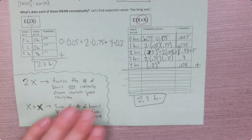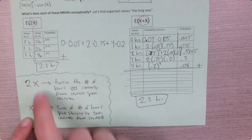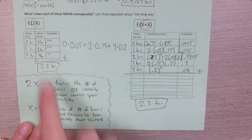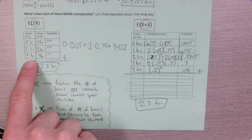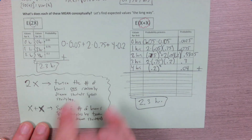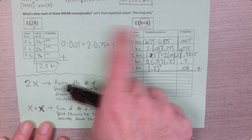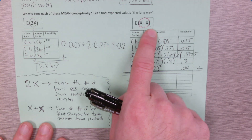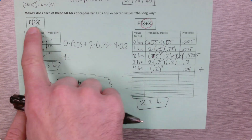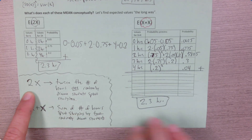Notice that these are the same — both 2x and x plus x give an expected value of 2.3 hours. Conceptually, 2x is very different than x plus x, and you can see that because there are really different outcomes possible for each. The expected value ends up being the same, which is an interesting and maybe non-obvious fact. But if we calculated the variance or standard deviation of these two, those would not end up being the same.